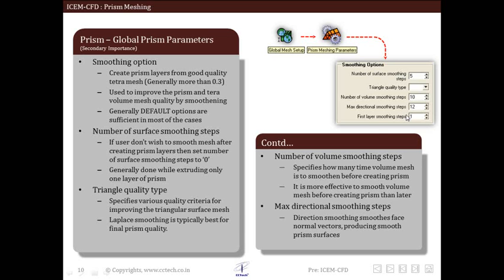There are other parameters like number of volume smoothening steps, which specifies how many times the volume mesh is to be smoothened before creating prism. This smooths the face normal vectors, producing smooth prism surfaces. So these are some additional global prism parameters and we will not go into much detail of this.